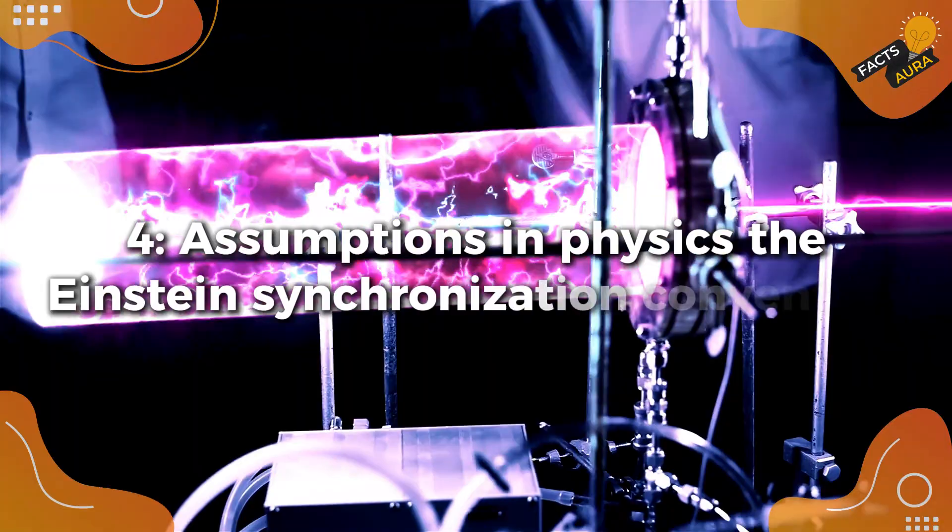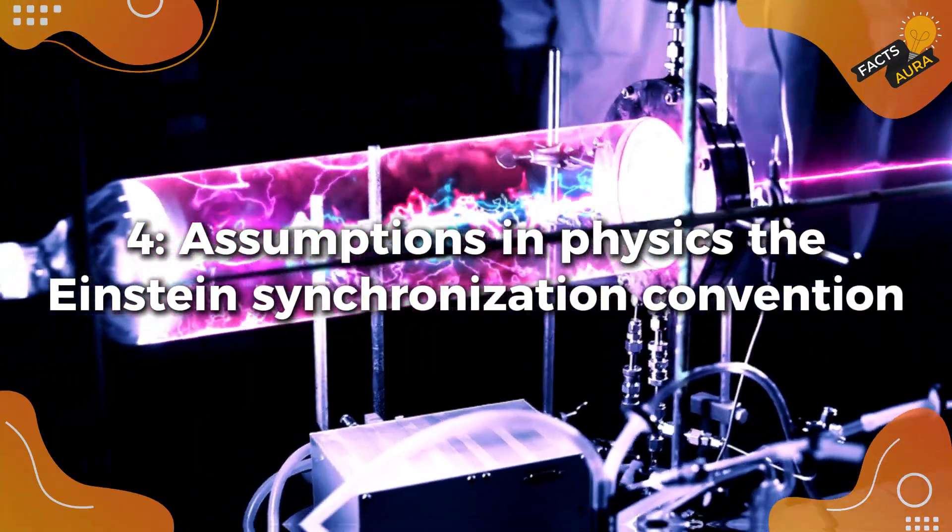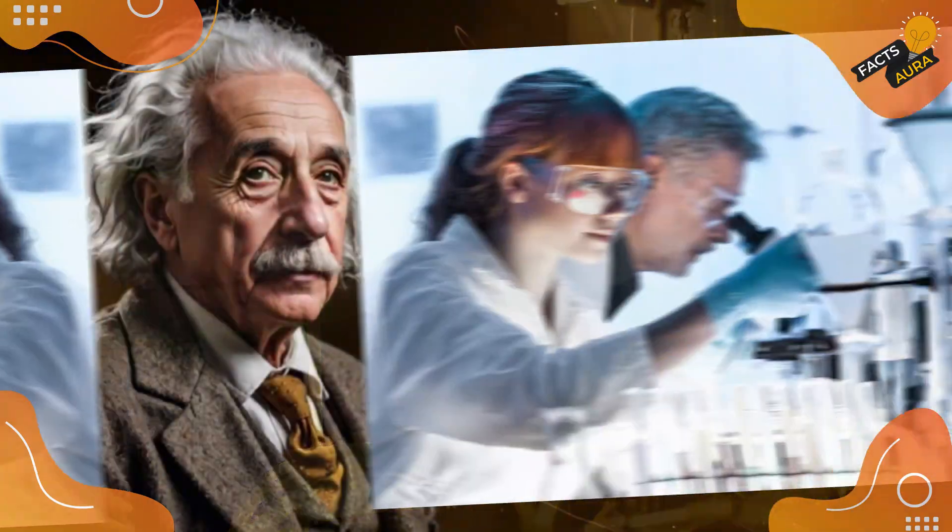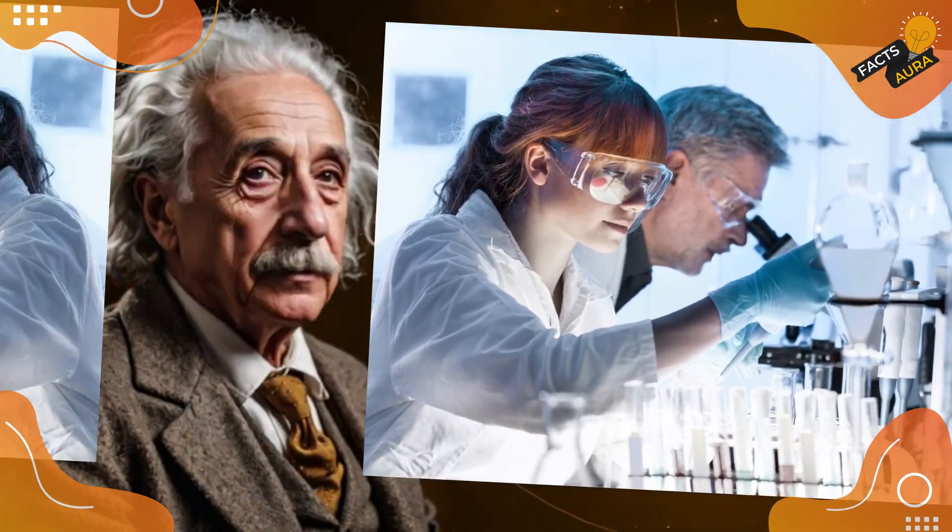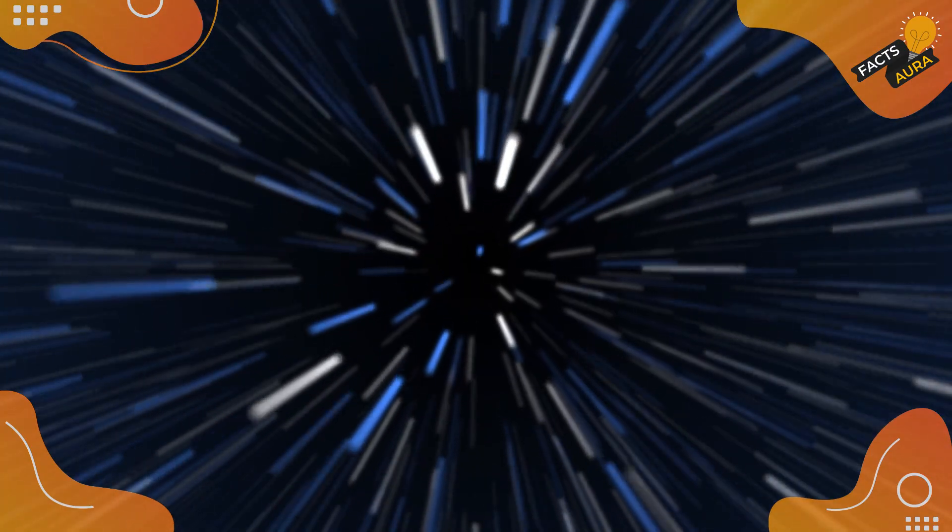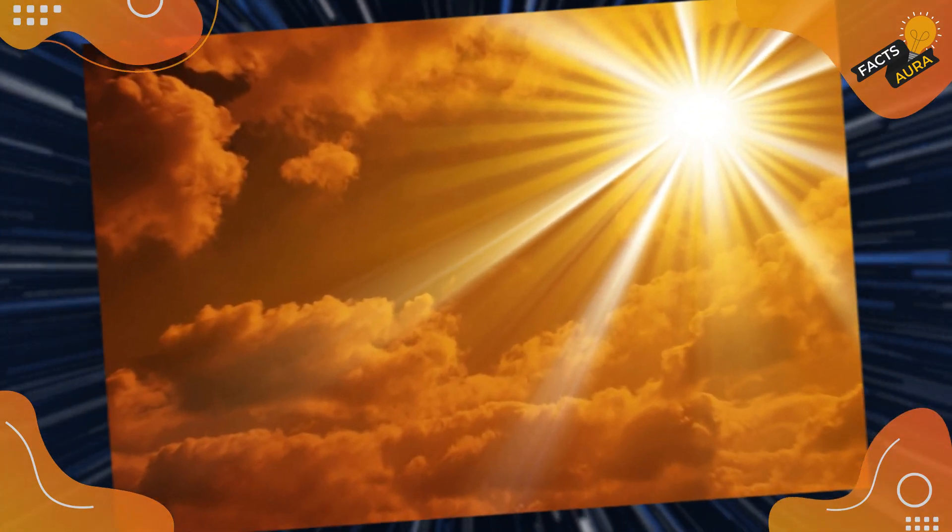Assumptions in physics: the Einstein synchronization convention. Because of the limitations in our measurement methods, scientists use an assumption called the Einstein synchronization convention to simplify the issue. This convention assumes light travels at the same speed in all directions.